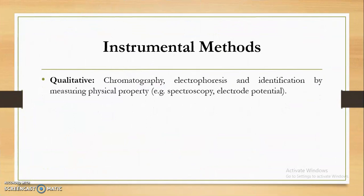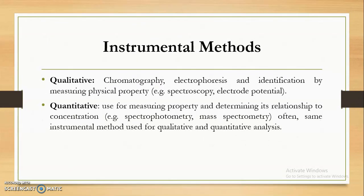We can use instrumental methods for qualitative as well as quantitative analysis. In qualitative instrumental methods, we can use chromatography, electrophoresis, and identification by measuring physical properties like spectroscopy and electrode potential. In terms of quantitative analysis, we can use different spectrophotometry as well as mass spectrometry as techniques. We will study these techniques in detail afterwards.